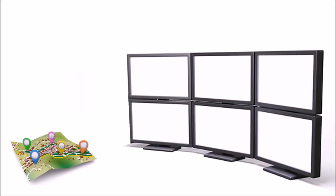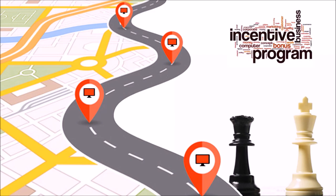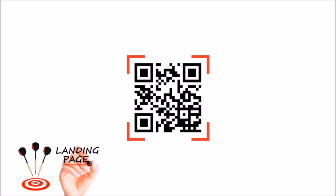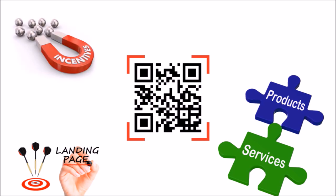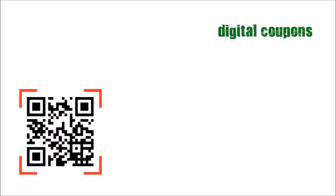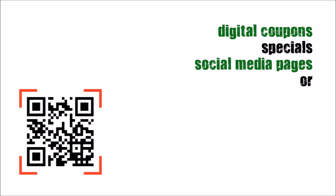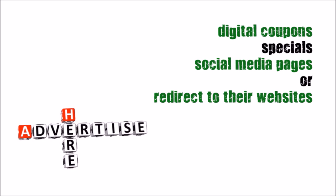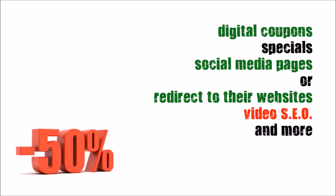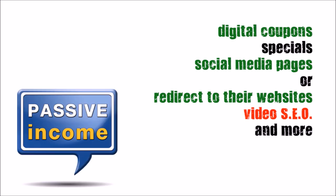When deploying digital signage advertising screens, use strategic incentives for your hosts wisely and effectively, like adding QR codes that redirect viewers to your host's website or provide more information about their products and services. These tools can also be used as an incentive for advertisers to purchase ad spots. QR codes can be used by advertisers to display digital coupons, specials, social media pages, or redirect to their websites. Other incentives include cross-advertising between host locations, digital services such as video SEO at discounted rates. By keeping your advertisers happy, you can count on yearly renewals — a great source of recurring income requiring minimal work.